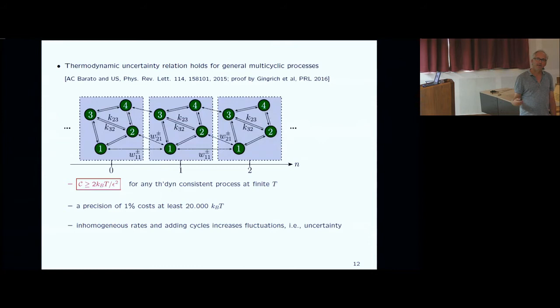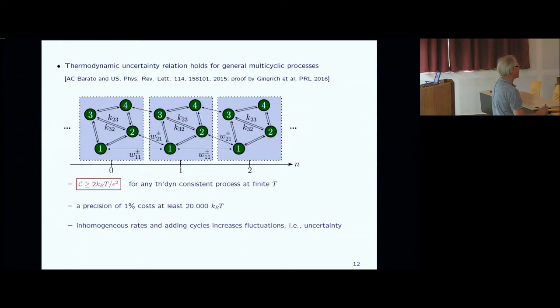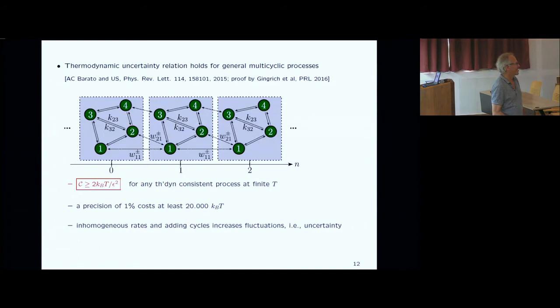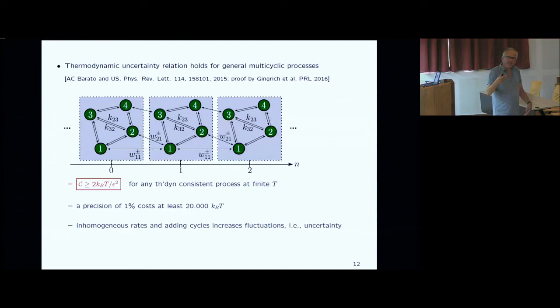This result is universal — it holds for arbitrarily complicated networks with internal states. The precision for steps along any coordinate is universally bounded by this relation. For example, if you want a process precise at the level of 1%, you have to invest at least 20,000 kBT — completely independent of the wiring of your biochemical network. Adding additional cycles typically increases fluctuations without gaining anything, which is why the simple asymmetric random walk is already the best case.